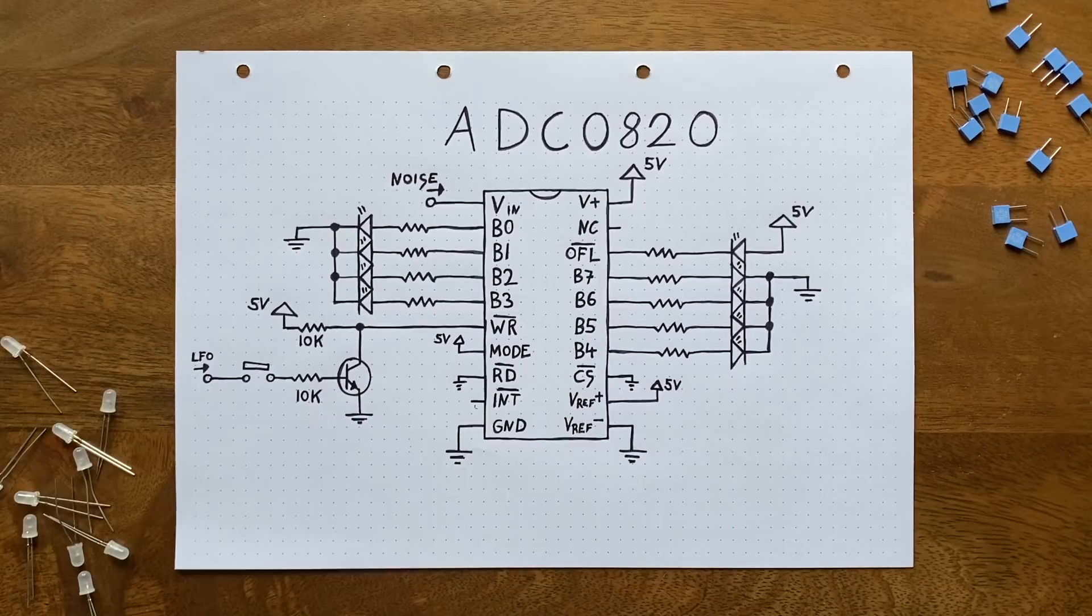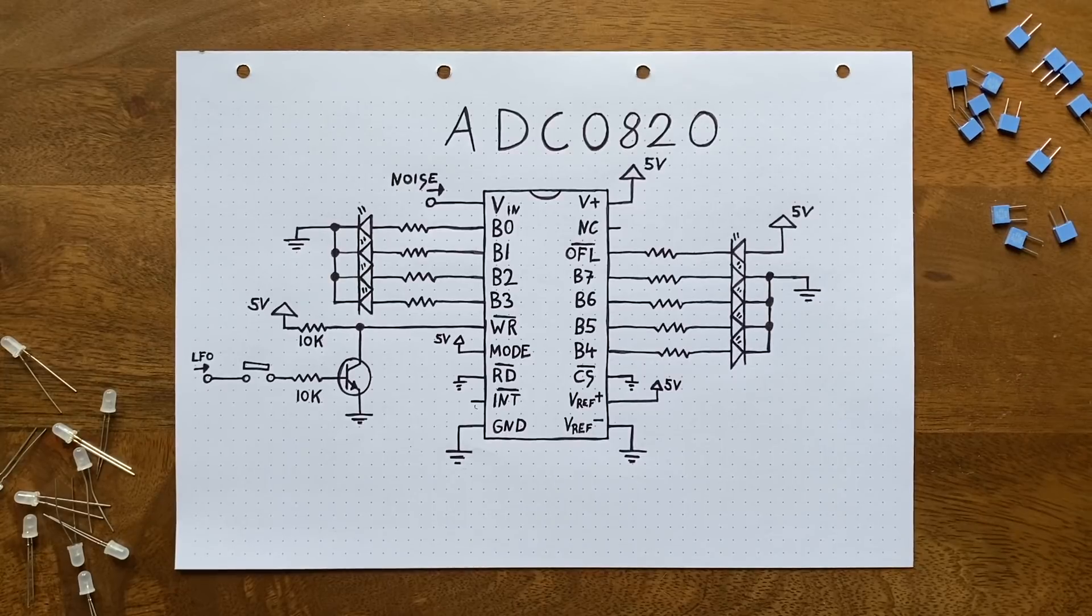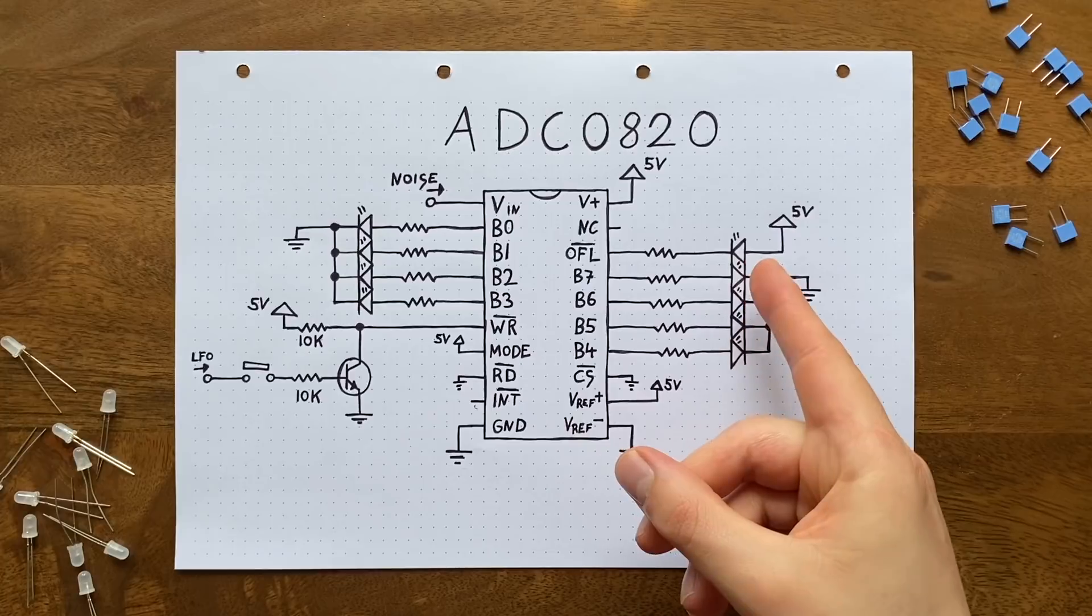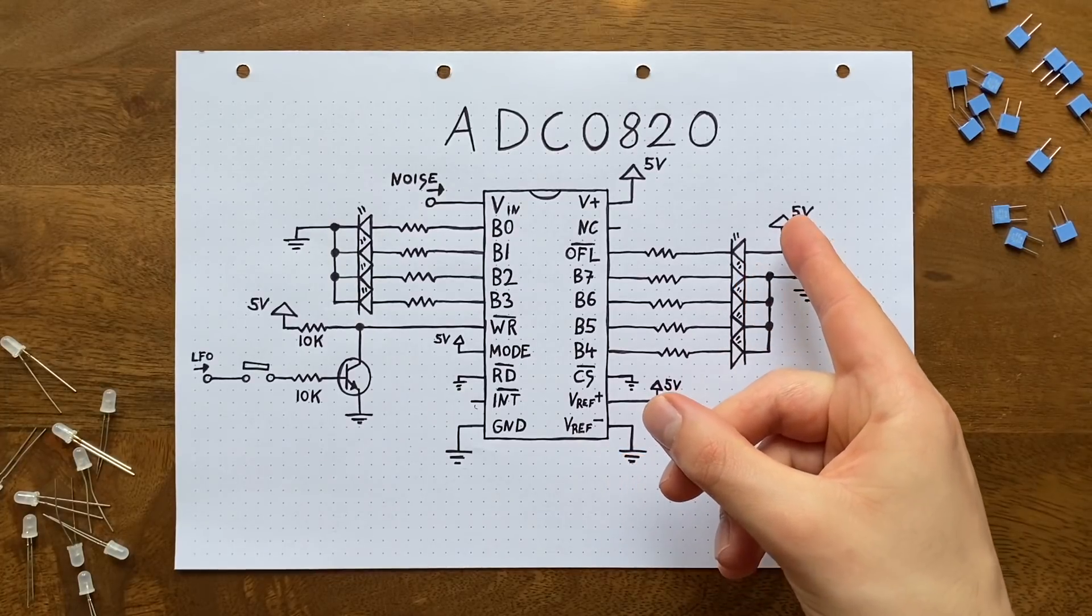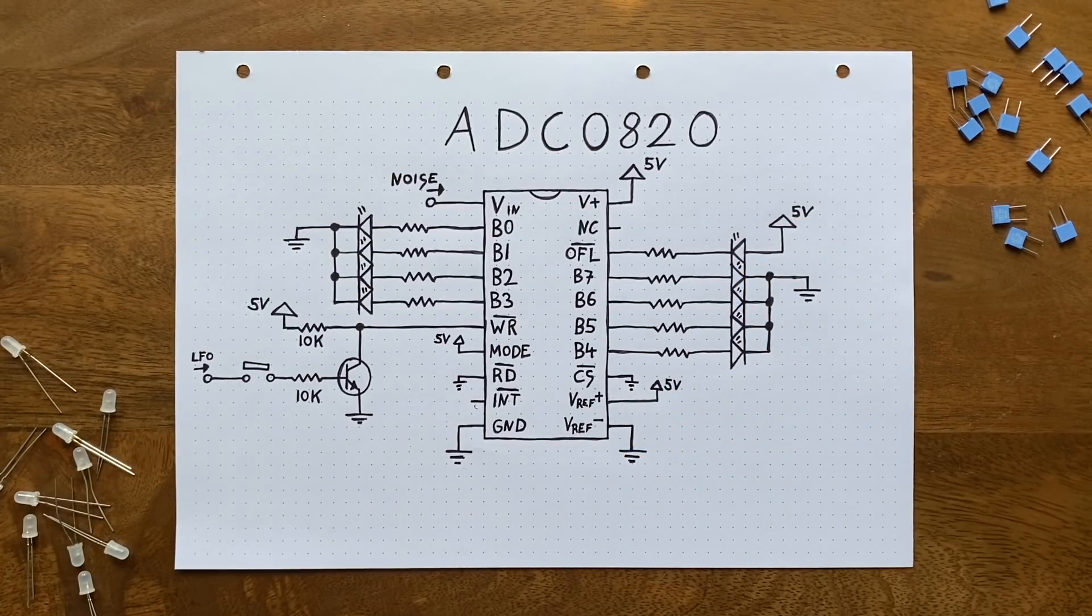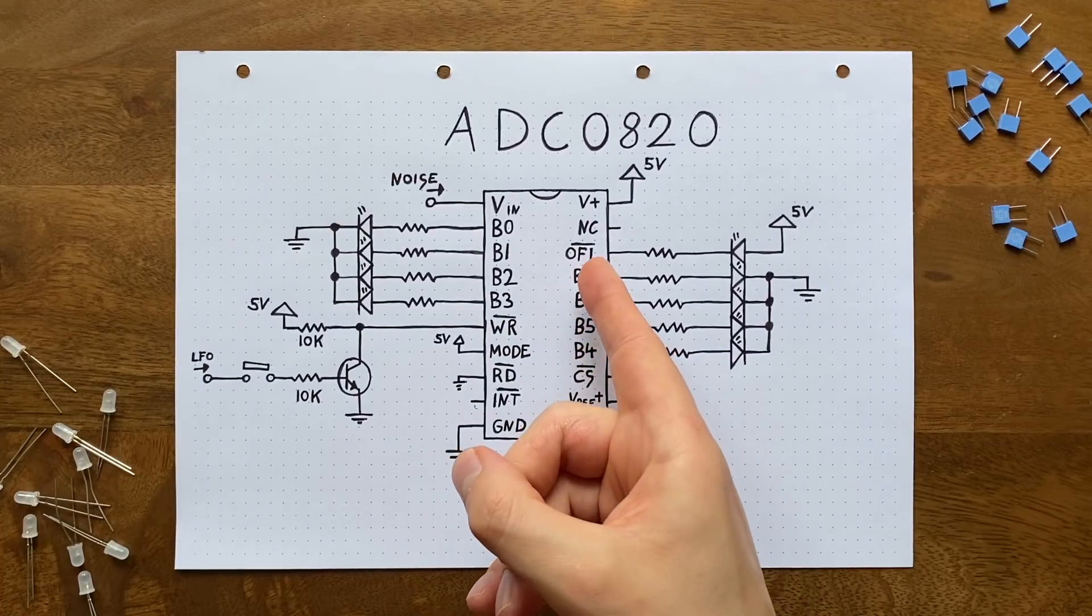But for our purposes, we can just treat it as an additional output bit. We only have to keep in mind that it is active low, meaning that it will go down to 0 volts whenever the sampled voltage does not fit into an 8-bit space, which is why I connected the LED backwards and to the positive rail here. So it will only light up when the overflow output is low.